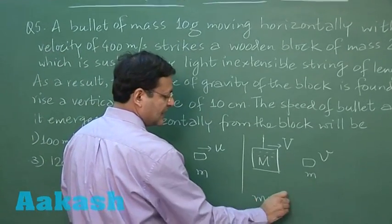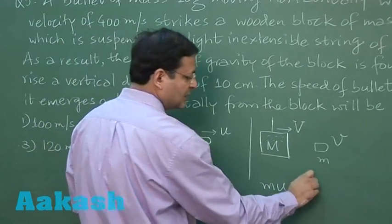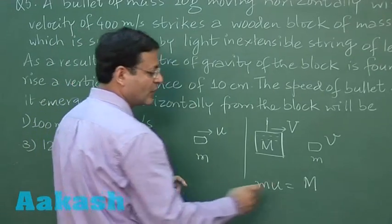Here you can say m u, where m is the mass of the bullet and u is the initial speed given to you, equals m v. Now this capital V has been given in terms of the height up to which it is going.